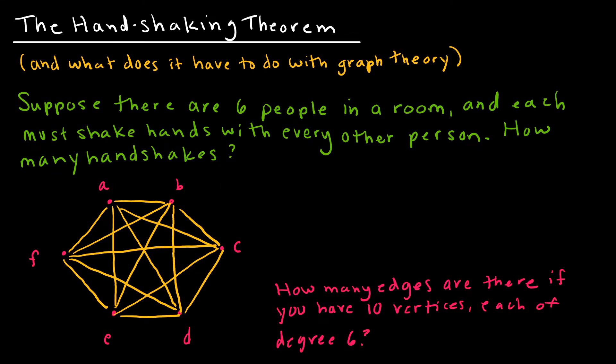Let's take a look now at the handshaking theorem, and you might not see this called the handshaking theorem everywhere, but it is a theorem or a relation that we're going to use often in graph theory. So the handshaking theorem essentially initiated with a question like what I have written in green. Suppose there are six people in a room, and each must shake hands with every other person. How many handshakes occurred? So without looking at the handshake theorem, let's just look at what the solution is. If I started, and again, if I have an edge connecting two vertices, that means they shook hands.